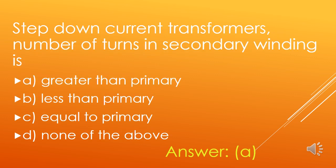In a step-down current transformer, the number of turns in the secondary winding is: A. Greater than primary, B. Less than primary, C. Equal to primary, D. None of the above. The number of turns in the secondary winding is greater than the primary winding in a step-down current transformer. So, option A is the right answer.